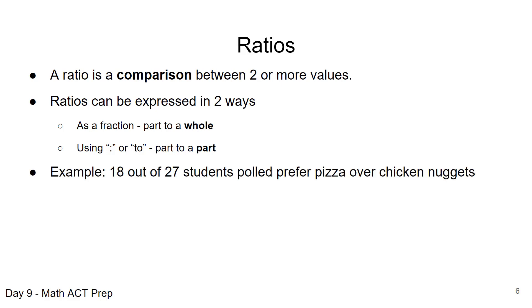So for example, if you say 18 out of 27 students polled prefer pizza over chicken nuggets, okay, as a ratio how we can express that, we could say 18 out of 27 students prefer the pizza over chicken nuggets. We can reduce that 18 over 27 to 2 thirds, or 2 out of 3 students, and that's normally how you would see it in a reduced form.